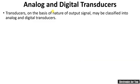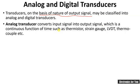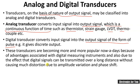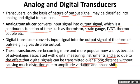The next type is analog and digital transducers, classified on the basis of output signal. Analog transducers convert the input signal into an output signal which is a continuous function of time. Examples include thermistors, strain gauges, LVDT, and thermocouple. Digital transducers convert the output signal in the form of pulses, giving a discrete output. Digital transducers are becoming more popular because digital signals can be transmitted over longer distances without much distortion due to amplitude variation and phase shift.